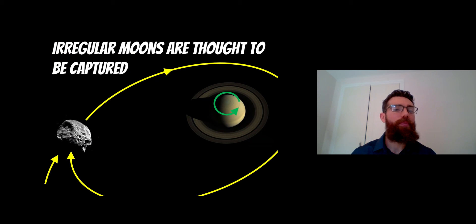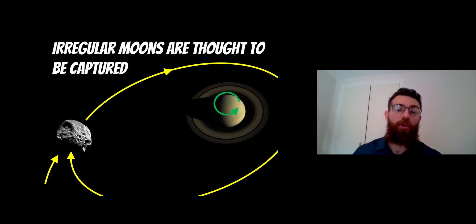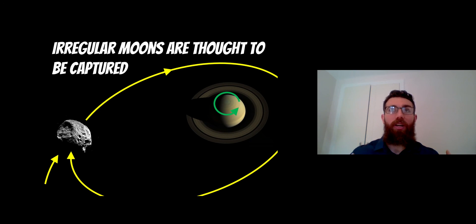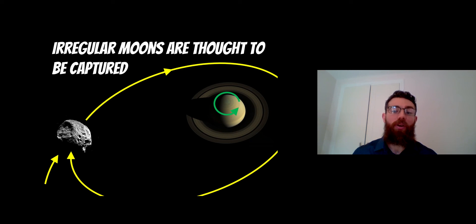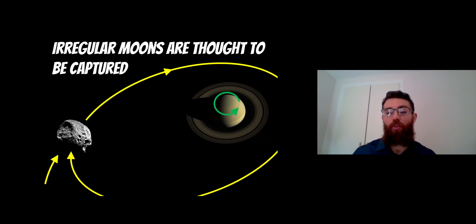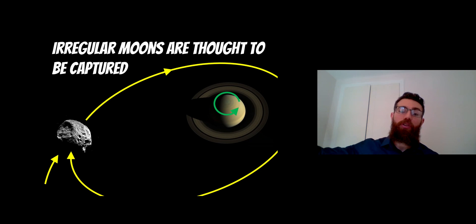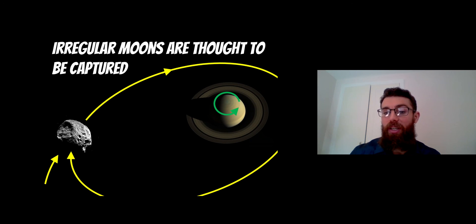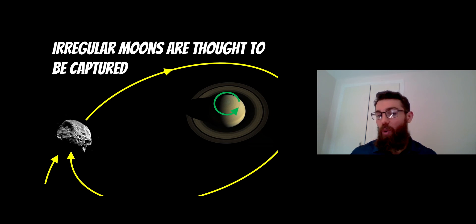Where do these key differences come from? Unlike regular moons, which are thought to form with the planet and therefore share common rotations, orbits, and directions, irregular moons are thought to be captured smaller objects that got too close. Because they are captured, and depending on their trajectory, they can come in from any direction. If they get too close, they can be gravitationally captured by the planet, and their trajectory will determine the final orbit. So it's quite possible that an object approaching from the opposite side ends up on a retrograde orbit, or approaching from above results in a very inclined orbit. This also explains why they have very eccentric orbits. The key difference is how they end up in their final position: one forms with the planet, and one is captured.